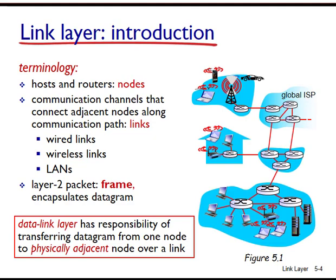Let's begin with some important terminology. We'll refer to any device that runs a link layer protocol as a node. Nodes include hosts, routers, switches, Wi-Fi access points, and so on. We will also refer to the communication channels that connect adjacent nodes along the communication path as links. For a datagram to be transferred from source to destination, it must be moved over each of the individual links in the end-to-end path.